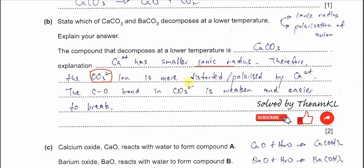So those are the things you must relate: ionic radius and polarization of the anion. The anion in this question is carbonate.